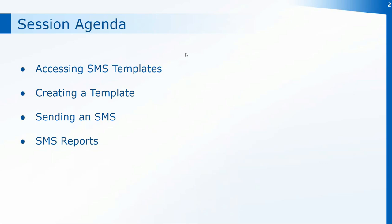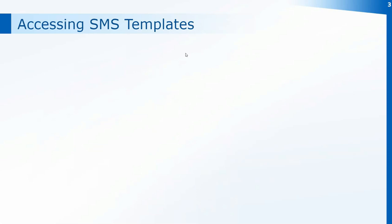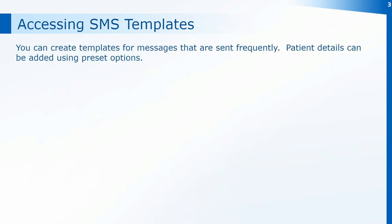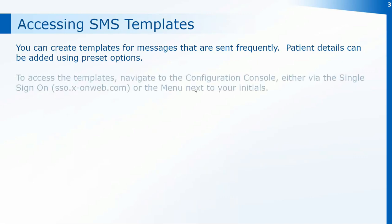To access the SMS templates on Surgery Connect you'll need to navigate to the configuration console. You can create templates for messages that are sent frequently from the practice, and patient details can also be added to the templates using preset options.